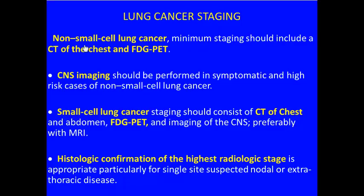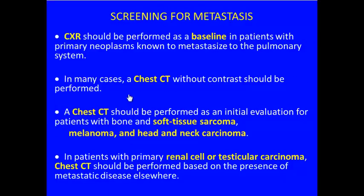With lung cancer staging, we separate cancers into non-small cell and small cell. For non-small cell, CT of the chest and PET imaging are the hallmarks. Small cell cancer is especially prone to metastasize, so in that case we look further for metastatic disease including CT of the abdomen and consideration of CNS imaging. CNS imaging would otherwise depend on whether someone is symptomatic or high risk, and we always want histologic confirmation of what we're treating.